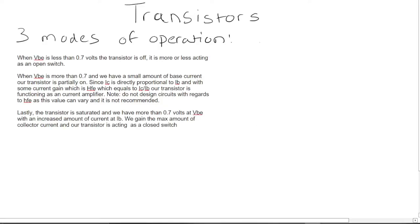I will now move on to the operations of the transistor. The transistor has three standard modes of operation. One, when VBE, so voltage base to emitter, is less than 0.7 volts, the transistor is off. It is more or less acting as an open switch. If this base here is less than 0.7 volts, no current, no flow.